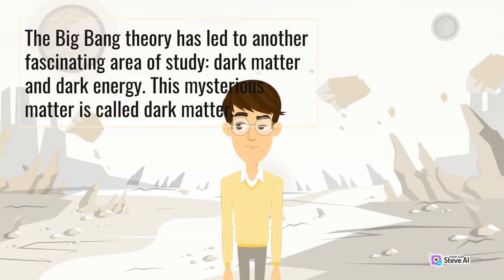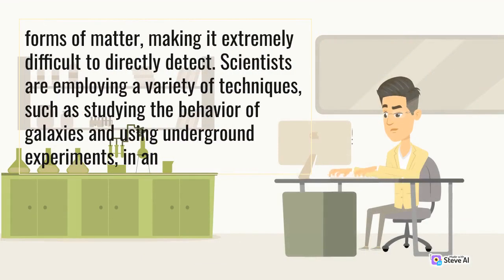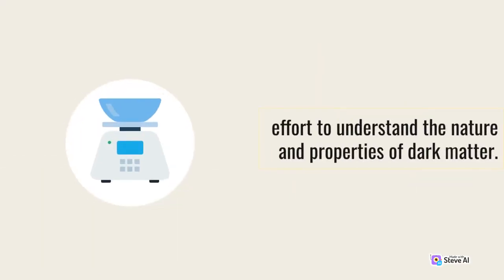The Big Bang Theory has led to another fascinating area of study: dark matter and dark energy. This mysterious matter is called dark matter. Dark matter constitutes about 27% of the total energy content of the universe, while ordinary matter makes up only around 5%. Despite its abundance, dark matter interacts weakly with light and other forms of matter, making it extremely difficult to directly detect. Scientists are employing a variety of techniques, such as studying the behavior of galaxies and using underground experiments in an effort to understand the nature and properties of dark matter.